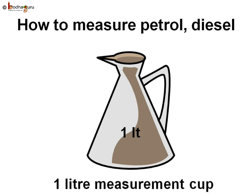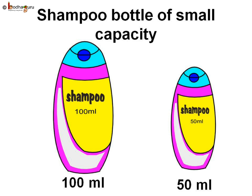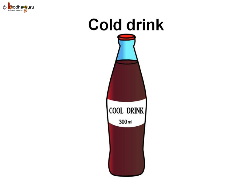The container used for measuring petrol or diesel is a little different and looks like this. You might have bought 100 ml or 50 ml shampoo bottles. We all like to drink cold drinks which come in 300 ml bottles.